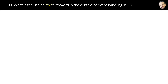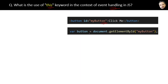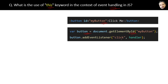What is the use of the 'this' keyword in the context of event handling in JavaScript? If we have a button element on our web page, we can get the reference to the button by using the getElementById method, and then we can attach it to an event.